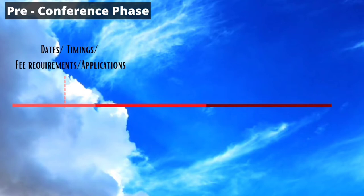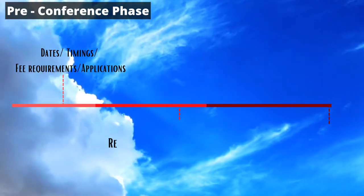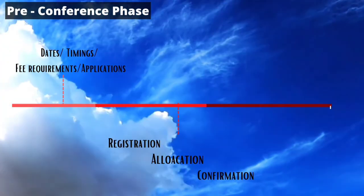For the delegate applicants, following the registration stage comes the allocation stage where the applicant's committee and portfolio will be allotted and confirmed when one pays the pre-specified conference fee. After this, an email of confirmation will be sent confirming one's portfolio and committee. All official communication between a delegate and the conference management happens through one's email mentioned in the registration form. These processes of registration, allocation and confirmation happen at least a month before the conference, allowing delegates adequate time to research and understand their portfolio, the agenda, and the rules of procedure.